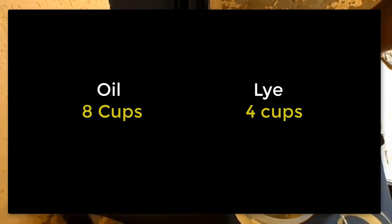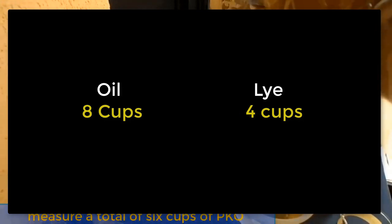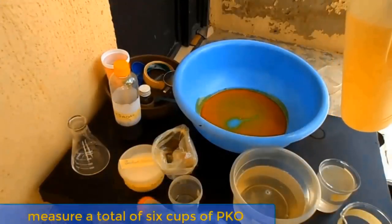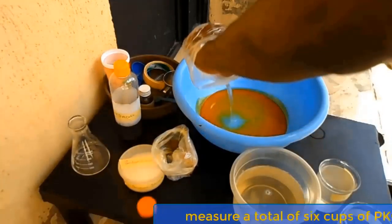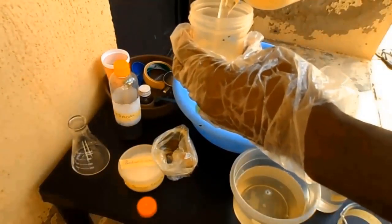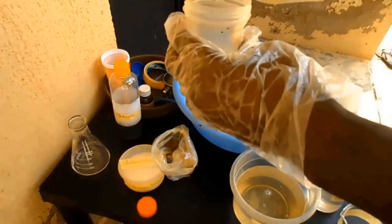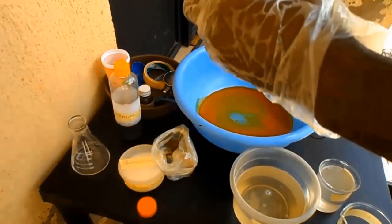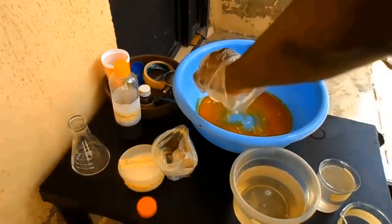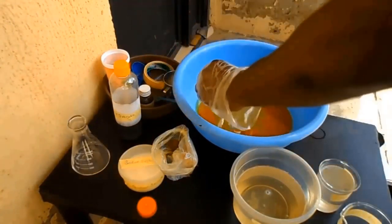If you're using eight cups of oil, you're going to measure four cups of lye. The amount of oil used must be two times that of lye. This is by default the amount that will make your soap not toxic to the hands of the user. When you make use of eight cups of oil and four cups of lye, all the oil will neutralize the quantity of the lye to form soap. Even if you're using drums, four drums of oil will always take two drums of lye.